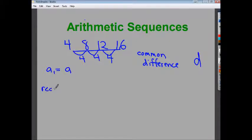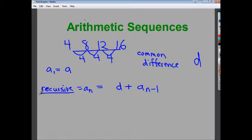Now, my recursive definition is very simple. A recursive definition is a definition based on the term before it. So A sub N would be the common difference plus the term before. So if I want to know what A sub 5 is, I need to know A sub 4 and then just add the common difference.